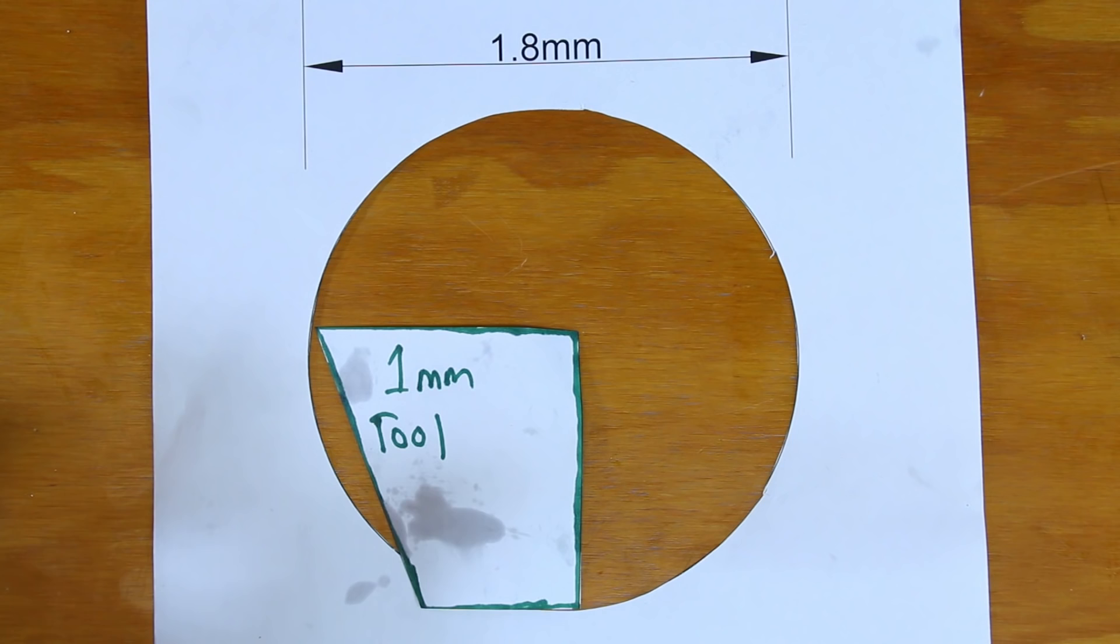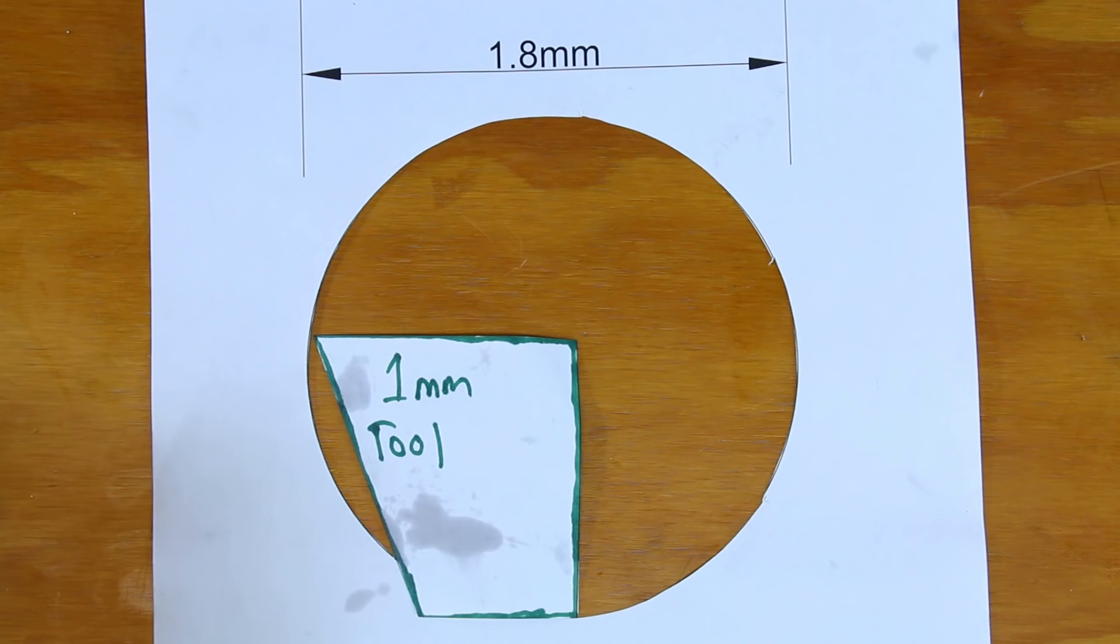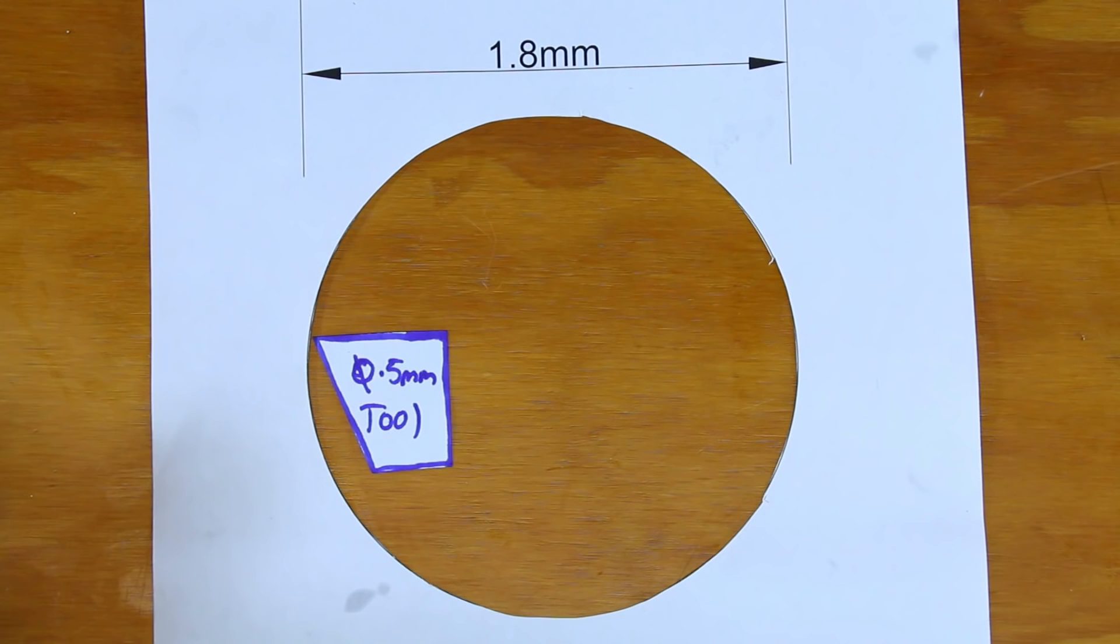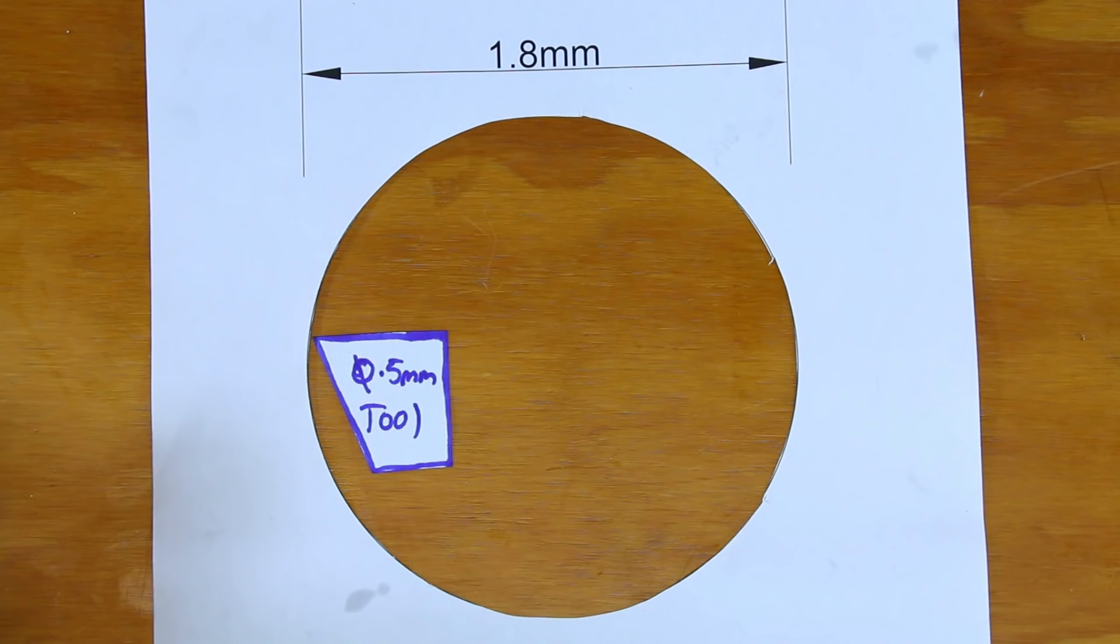So basically here's the 1.8 millimeter hole blown up seven times. With the one millimeter tool, the bottom of the tool actually hits the hole, so I can't bore a hole all the way through the material. The 0.5 millimeter tool has clearance everywhere, which is perfect.